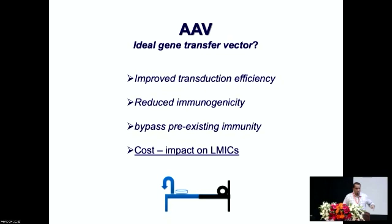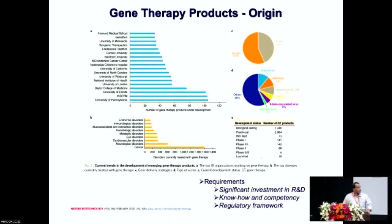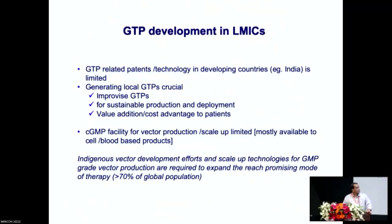As you can see here, the majority of gene therapy products — the viral vectors, particularly AAV vectors — have been developed by universities in the West, particularly the University of Florida and UPenn. As a result, they are not available outside the scope of IP transfer for anybody to develop. This means we need significant investment in R&D to develop our own indigenous vectors, build know-how and competency, and also develop a regulatory framework for trials. In lower and middle income countries like ours, this is extremely crucial, along with the capacity to develop GMP-grade materials to escalate it to patients.